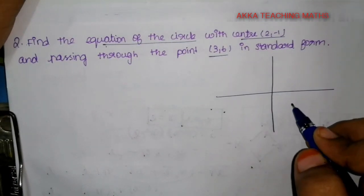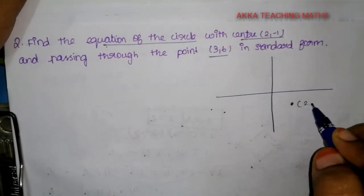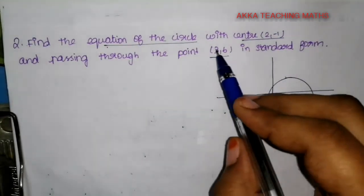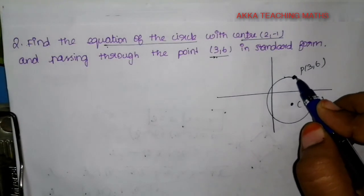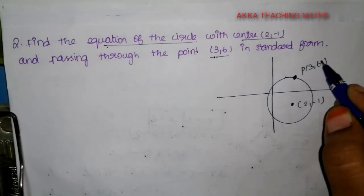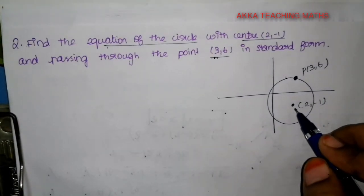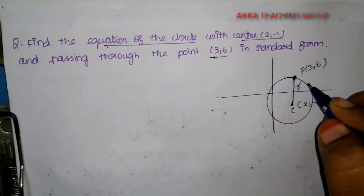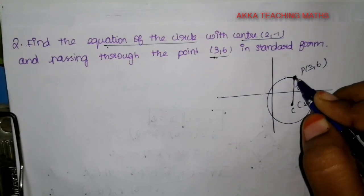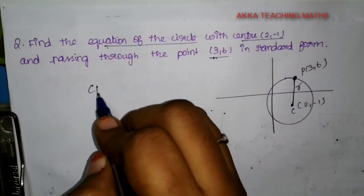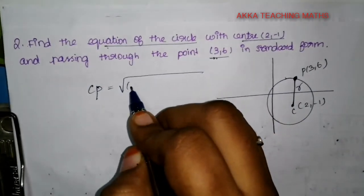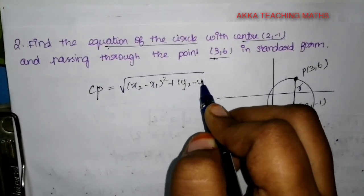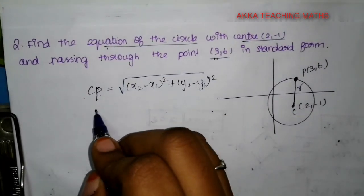So the center (2, -1) is somewhere here on the diagram. The passing point is (3, 6), so P = (3, 6). The center is (2, -1), and we need to find the distance from the center to the passing point. CP equals the distance formula: square root of (x2 - x1) squared plus (y2 - y1) squared. This distance CP is equal to R.